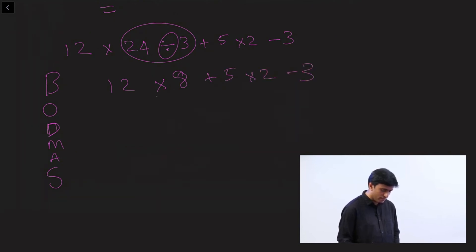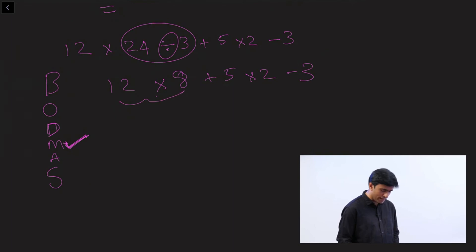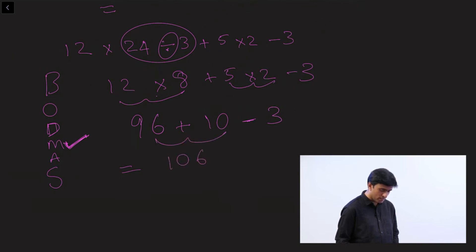Now we have multiplication, addition, and subtraction. M comes before A and S, so multiply first: 12 × 8 = 96 and 5 × 2 = 10, giving 96 + 10 − 3. Then addition: 96 + 10 = 106. Finally, 106 − 3 = 103. That's the answer.